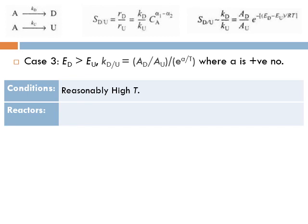So we choose reasonably high temperature. We don't go to very high temperatures because that could create more side reactions and more undesired products. Additionally, very high temperatures require better materials of construction. For reactors in Case 3, you need heated reactors or a heated feed.